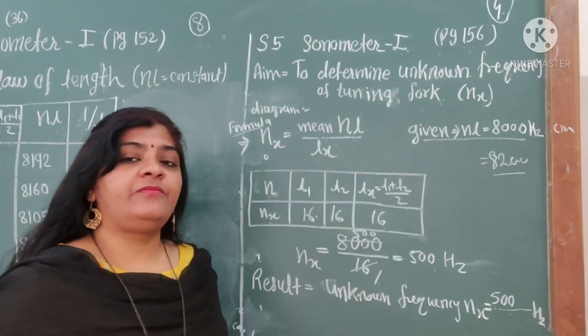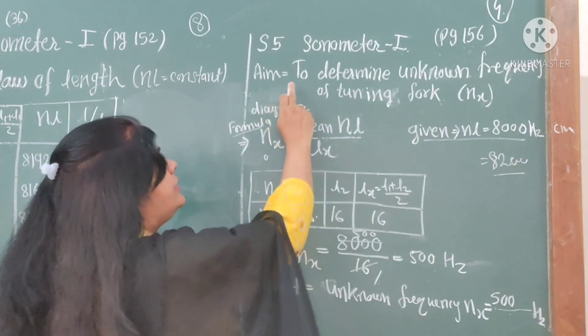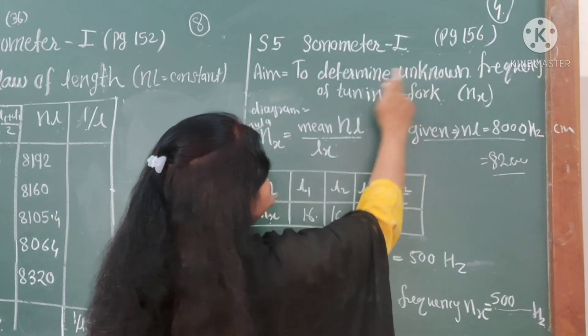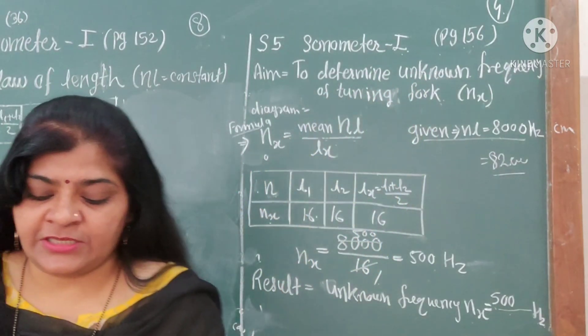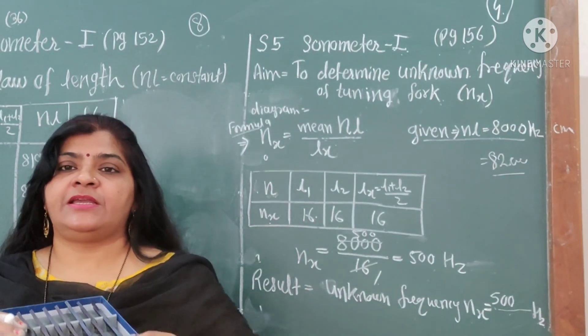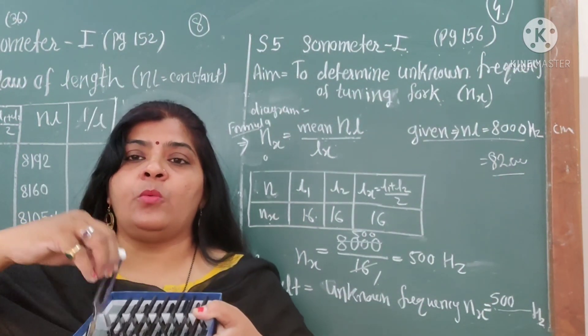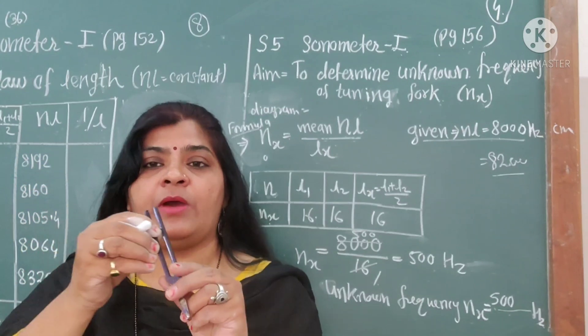First, you will get a boat slip that says to determine the unknown frequency of tuning fork. Determine the unknown frequency. This type of setup is not given to you. Only one frequency is given.